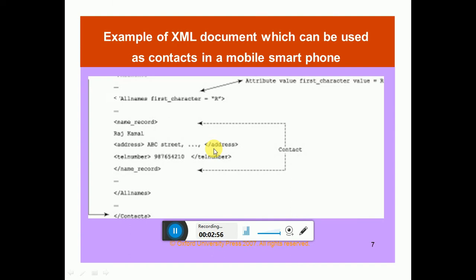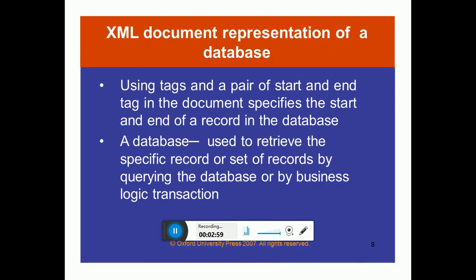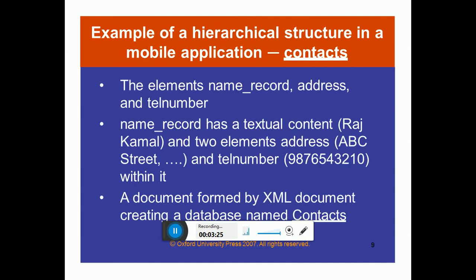XML document representation of a database: in a database, an XML document can be represented using tags — a pair of start and end tags in the document specifies the start and end of a record in the database. A database is used to retrieve the specific record or set of records by querying the database. The elements — name record, address, and telephone number — suppose Raj Kamal is there with elements ABC and telephone number, forming a database in contacts.